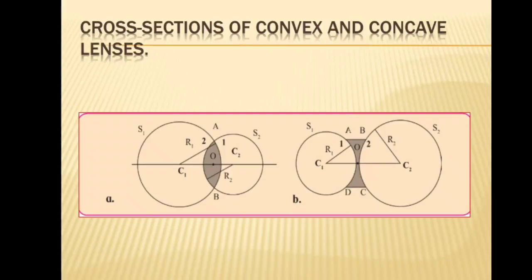A lens with both surfaces spherical has two centers of curvature, C1 and C2. Next, radius of curvature, R1 and R2 — the radii R1 and R2 of the spheres whose parts form the surfaces of the lens are called the radii of curvature of the lens. The imaginary line passing through both centers of curvature is called the principal axis of the lens.